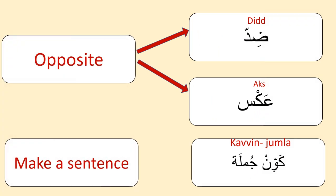For 'opposite' in Arabic there are two words — 'didd' or 'antonym' — they both have the same meaning. Next is 'kawwin jumla' meaning make a sentence.